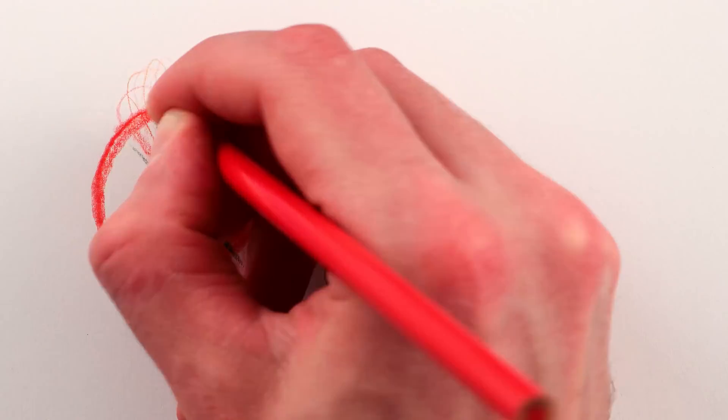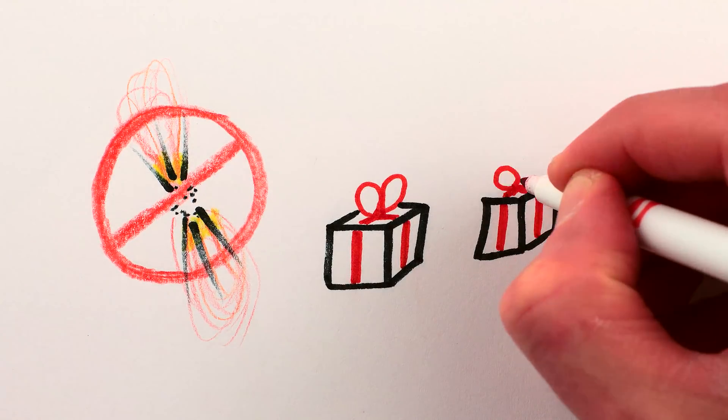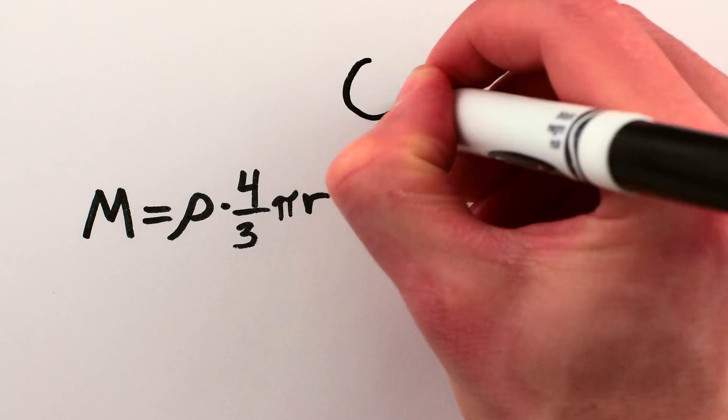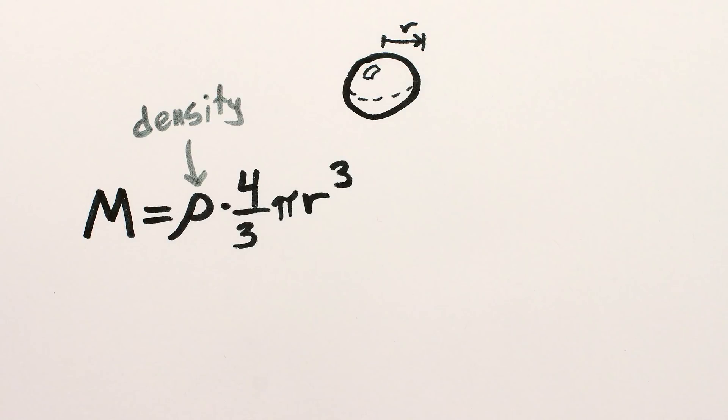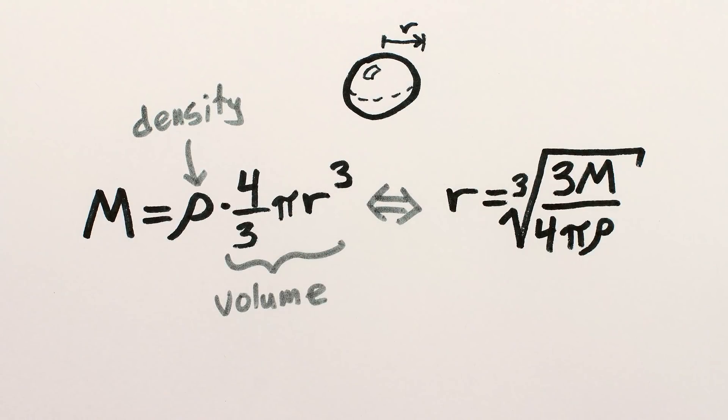But suppose you don't have access to supernova strength compression. You can instead make a black hole by adding more mass to your object. The equation you want is here. It describes how the mass of a spherical object is equal to the density of the material in question times the volume it takes up. Or rearrange it a little bit, it says that the radius of that sphere is proportional to the cube root of its mass.